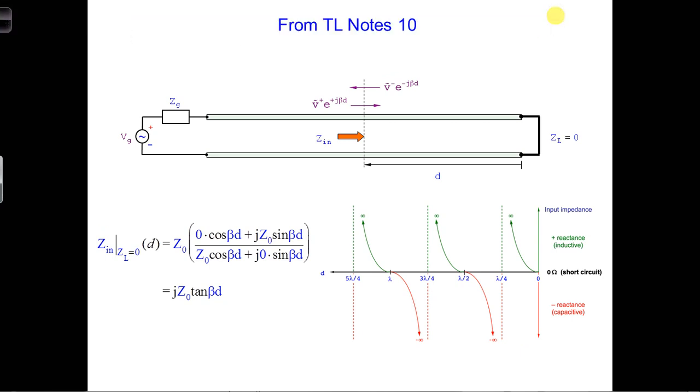Remember this slide from Notes 10? In these results, we saw that the input impedance of a shorted transmission line, ZL equals zero, is purely imaginary, and it changes between positive and negative values with distance from the load.